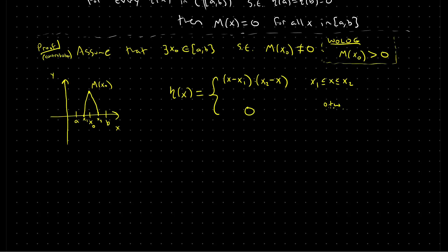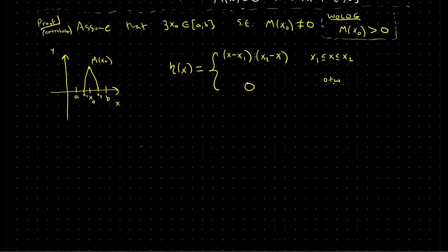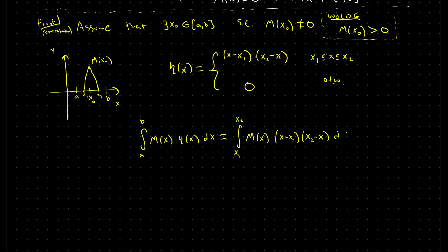This function η satisfies both boundary conditions — it's zero at a and zero at b — and it's a positive function on the interval from x₁ to x₂. The contradiction arises when we compute the integral from a to b of m(x) times η(x). Since η is zero away from x₁ and x₂ but non-zero inside the interval, this integral reduces to the integral from x₁ to x₂ of m(x)(x − x₁)(x₂ − x) dx.